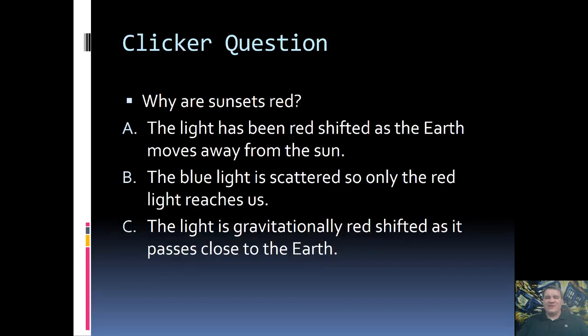Here is our second lecture quiz question. Why are sunsets red? A. The light has been redshifted as the Earth moves away from the sun. B. The blue light is scattered, so only the red light reaches us. Or C. The light is gravitationally redshifted as it passes close to the Earth. Go ahead and think about it, and we'll discuss in just a bit.